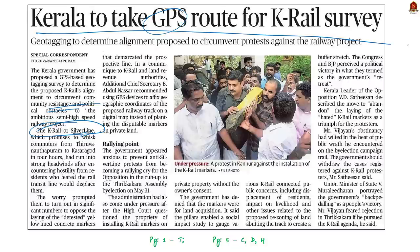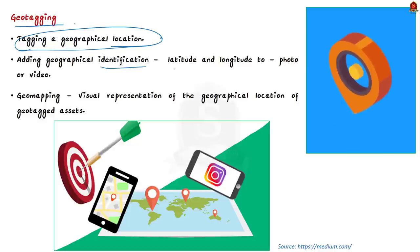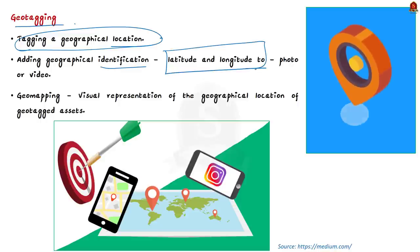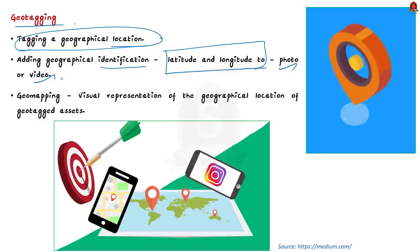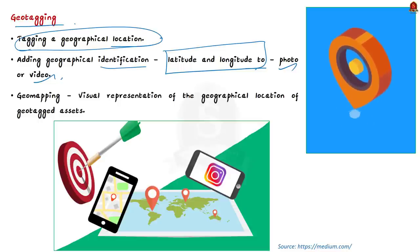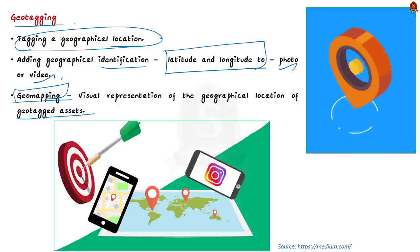To understand this move, let us understand geotagging. It is a term used to describe tagging a geographical location — the process of adding geographical identification like latitude and longitude to various media such as photos or videos. Geotagging helps users find location-specific information from a device and provides users the location of the content of a given picture. There is also another associated term — geomapping — which is a visual representation of the geographical location of a geotagged asset, layered on top of a map or satellite imagery. Geomapping uses geotagged assets.